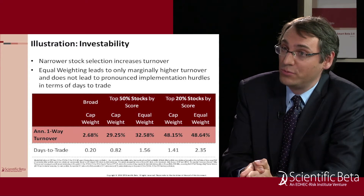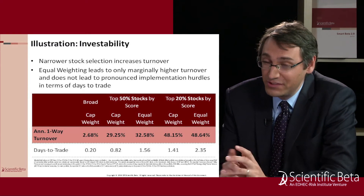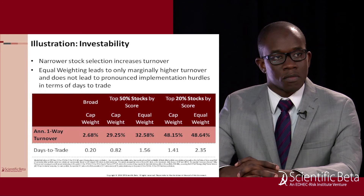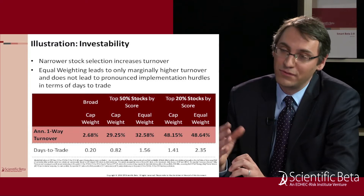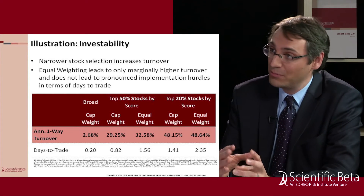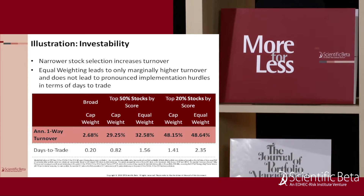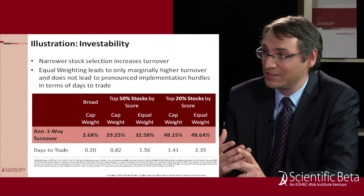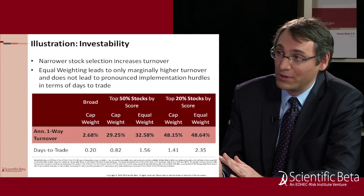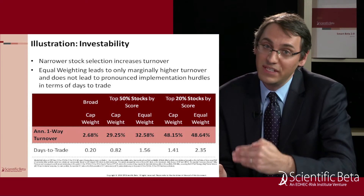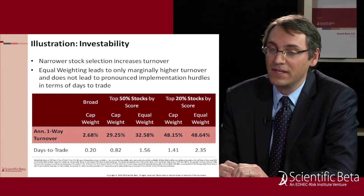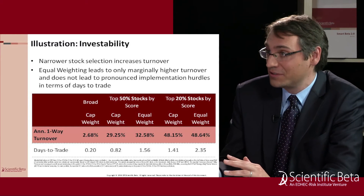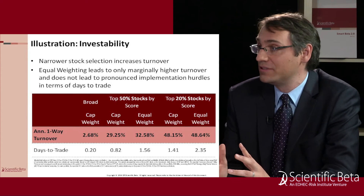An interesting finding is what happens when you equal weight instead of cap weight. Equal weighting doesn't actually add much turnover over cap weighting, contrary to sometimes-held beliefs. In factor indices, most of the turnover comes from how the stock selection changes over time — you're selecting stocks with the highest factor score, and that changes over time. So whether you equal weight or cap weight doesn't make a big difference for turnover. Equal weighting has only slightly higher turnover than cap weighting, no severe implementation issues, does increase the Sharpe ratio, and is quite well behaved in terms of implementation challenges.